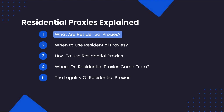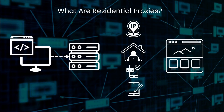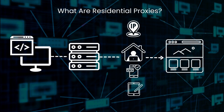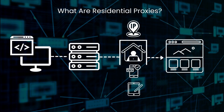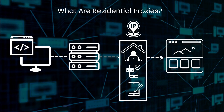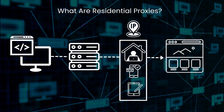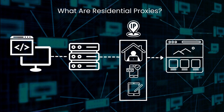Residential proxies are proxies that route their traffic through someone's home or office internet router, not a data center, making it look like the request is coming from someone's house or local business. Residential proxies differ from data center proxies in the fact that the underlying IP address is owned by an internet service provider and has been assigned to a specific device, such as a computer, mobile phone, or tablet.